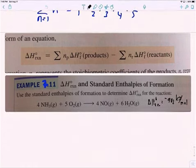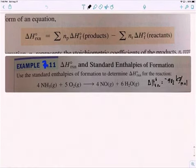For the heat of reaction, this is the sum of the moles of products times heat of formation of the products minus the sum of the moles of reactants times the heat of formation of reactants. Use the standard enthalpy of formation to determine the heat of reaction, the standard heat of reaction for this reaction here.